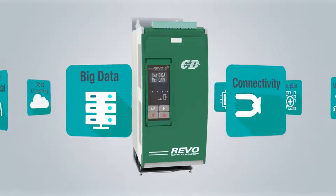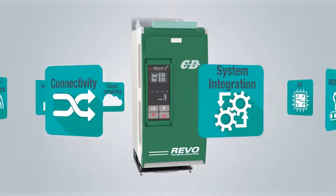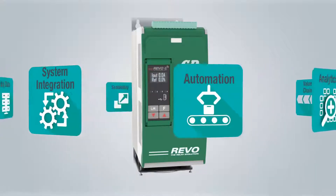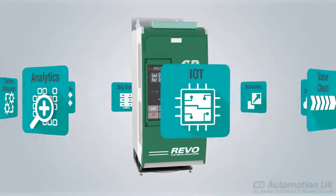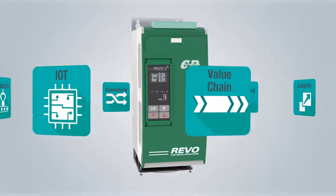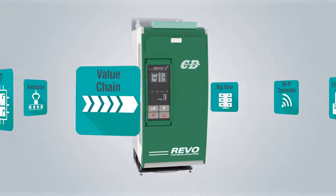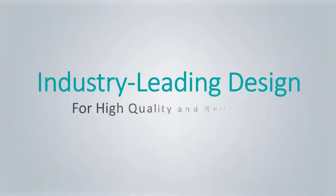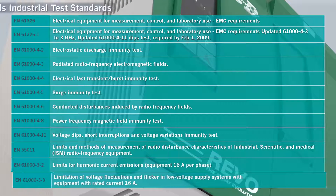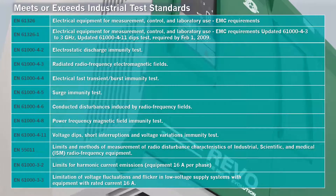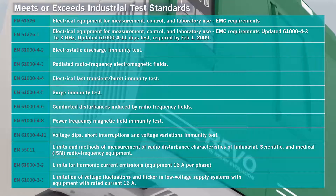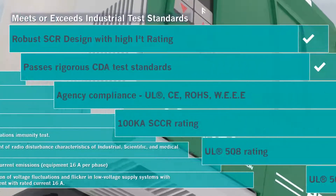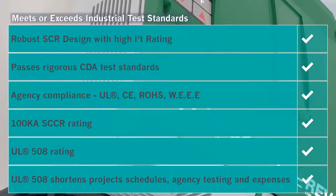Avoid the costs and production delays of expensive complex testing while extending the life of your heater with Revo C's useful wet heater bake-out function, one of many new product features. Revo C's breakthrough performance is enabled by a robust SCR design that meets the quality and reliability needs of rugged industrial environments. This performance has been validated with stringent testing that meets or exceeds industrial test standards and is backed by numerous agency certifications.